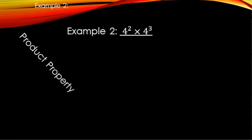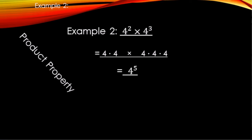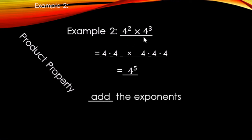Let's look at the product property. We have 4 squared times 4 cubed — two 4s being multiplied times three 4s being multiplied. Expanding it out, we count a total of five 4s being multiplied. So when we have the same bases, we simply add the exponents: 2 plus 3 equals 5, giving us 4 to the fifth.